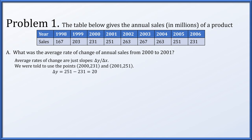The average rate of change is just a slope — delta y over delta x. We compute delta y to be the difference of the y-coordinates, which is 20, and delta x to be the difference of the x-coordinates, which is simply 1. This gives the average rate of change to be 20, measured in millions of dollars per year.